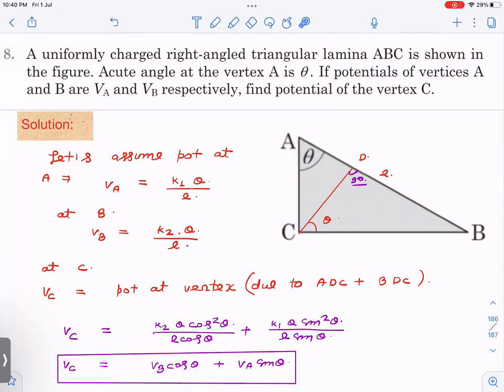And that is how you get Vc is equal to, this now I have substituted K2Q by L, you can see as VB and here VA. So you get VB cos theta plus VA sine theta. Try to do this by actual integration method also, you will learn some new thing.